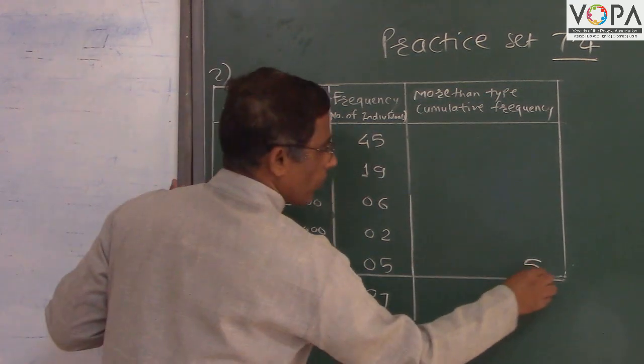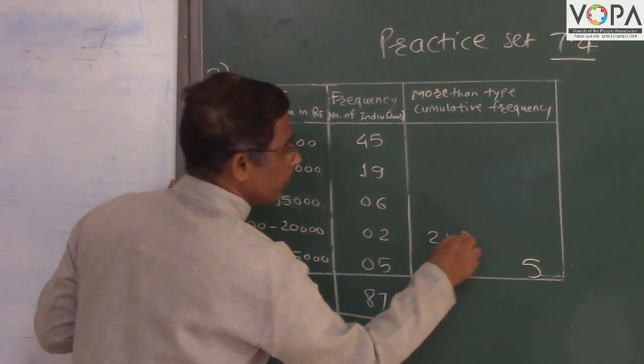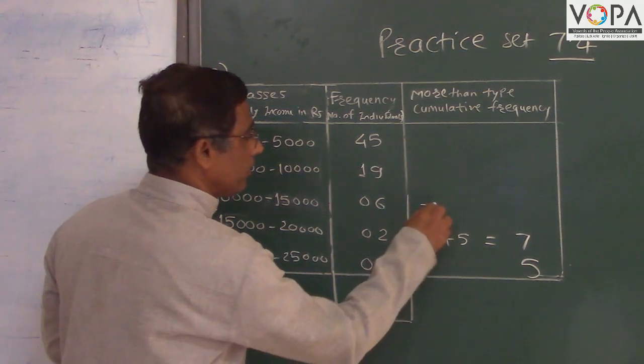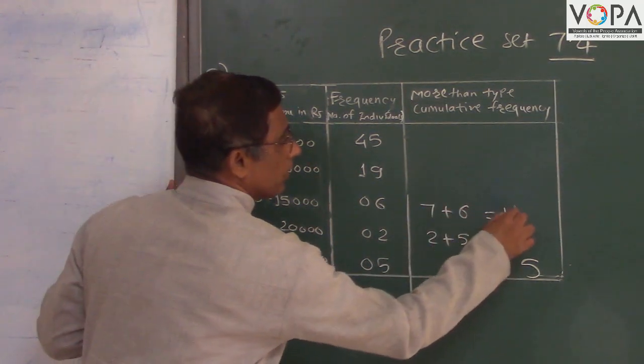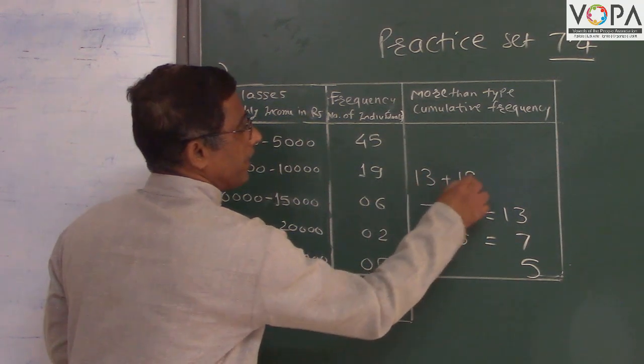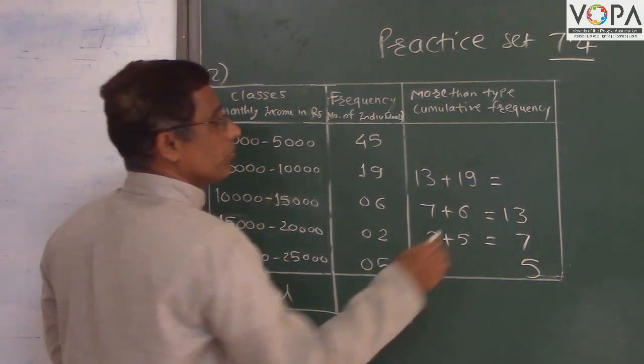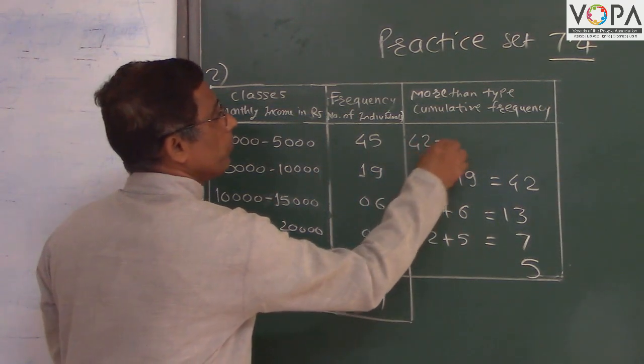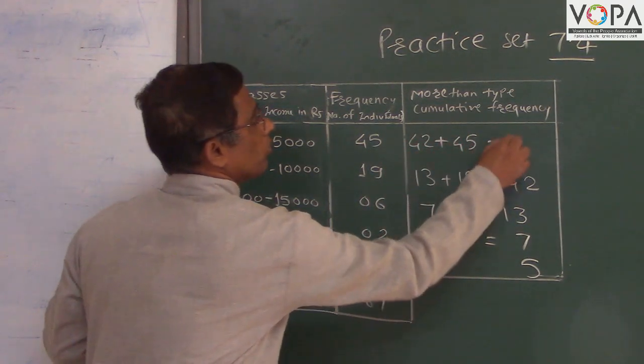So here is 5. 2 plus 5, 2 plus 5 is equal to 7. Again add this 7 plus 6 equal to 13. 13 plus 19 is equal to 42. And again add 42 plus 45 is equal to 87. So such a type of frequency distribution table means more than type cumulative frequency.